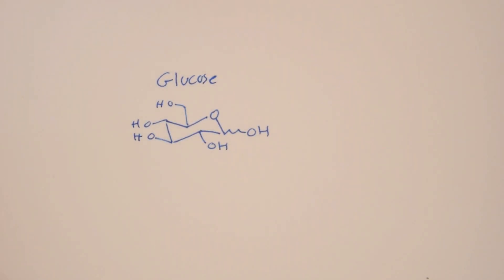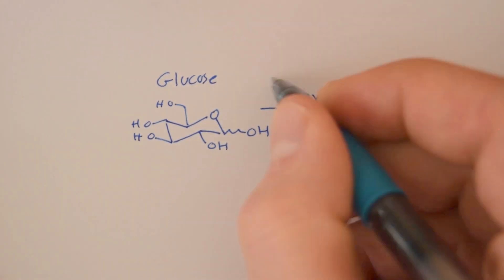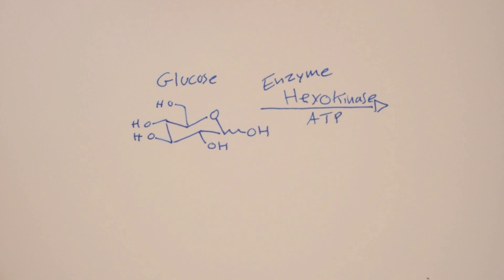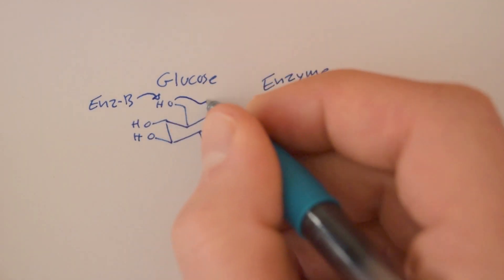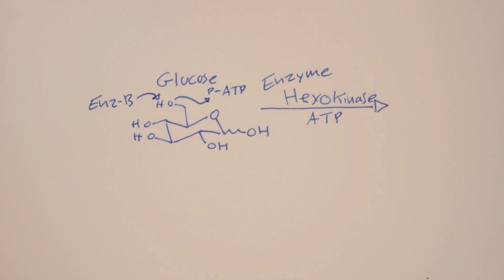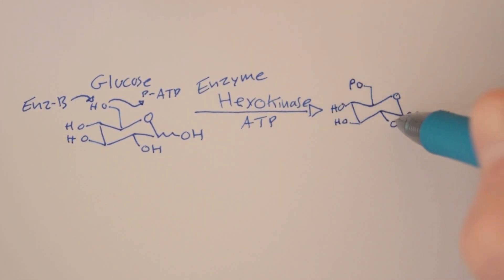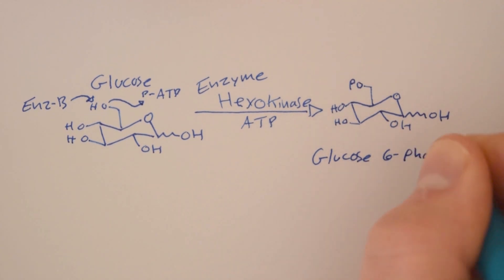So here we have glucose. The first enzyme is hexokinase, which is going to add a phosphate to the sixth carbon on the glucose. This makes glucose 6-phosphate.